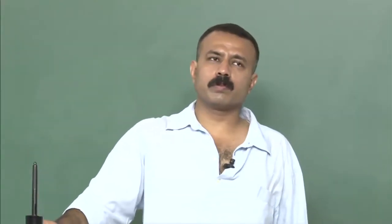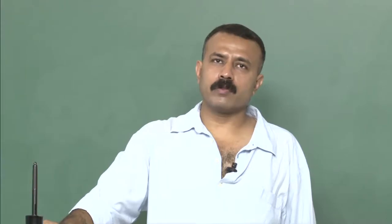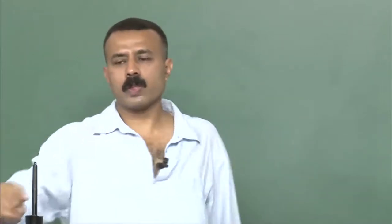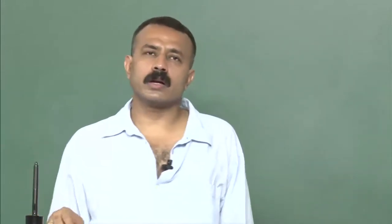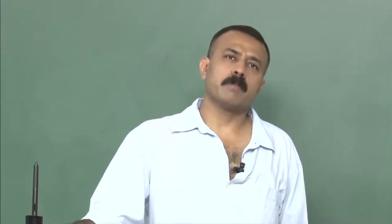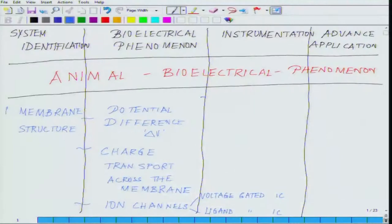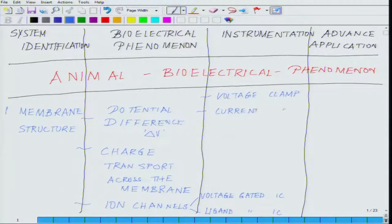The membrane is the most primary level where electrical impulses are generated, and from there the impulse keeps traveling from one membrane to another. The major techniques that have evolved in the study of membranes include voltage clamp studies, current clamp studies, patch clamp studies, and single channel current measurements. In the instrumentation section, we will cover voltage clamp, current clamp, and patch clamp.